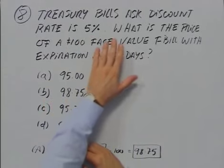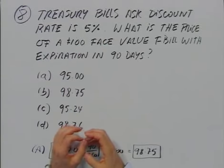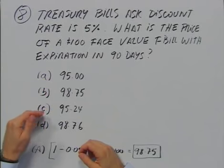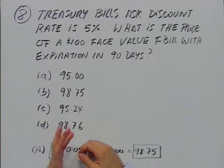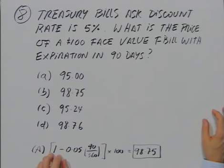Treasury bills' asked discount rate is 5% — remember, this is an annual rate. What is the price of a $100 face-value T-bill with expiration in 90 days? The alternatives are A, $95; B, $98.75; C, $95.24; or D, $98.76. You subtract 5% adjusted by the 90 days to expiration from 1, then multiply by the face value. Doing that calculation gives you $98.75 — answer B.